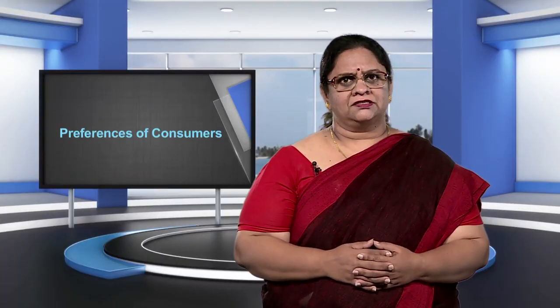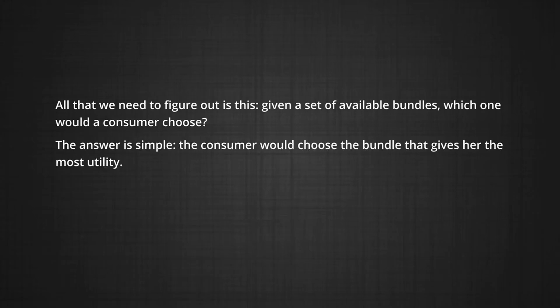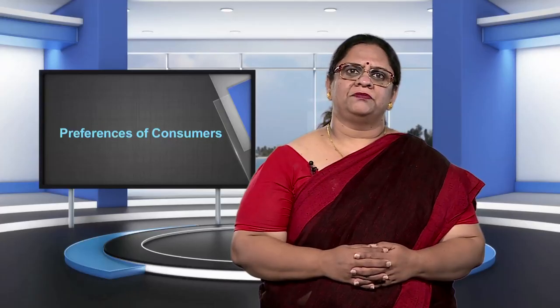In this module, we start with the description of what makes me prefer one bundle of commodities over the other. We keep the Marshallian assumption that consumers consume because commodities give them utility — what we reject is the idea that this utility can be measured. In fact, we don't need to measure utility to analyze consumers' behavior. All we need to figure out is: given a set of available bundles, which one would the consumer choose? The answer is simple: the consumer will choose the bundle that gives her the maximum utility. How do we know which bundle gives the most utility? We ask the consumer to rank all the available bundles in order of preference.